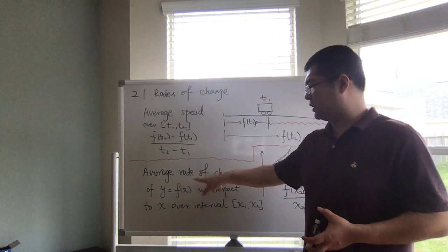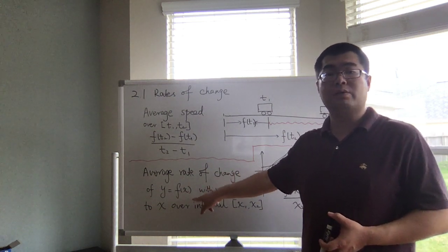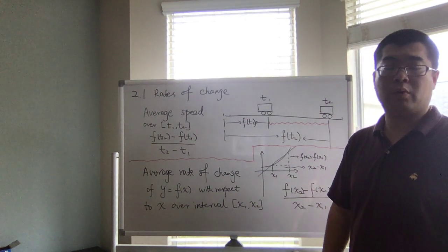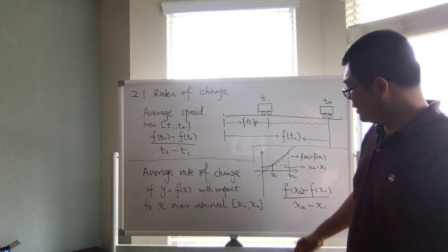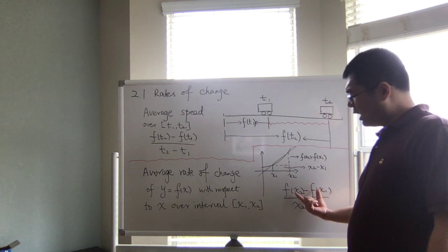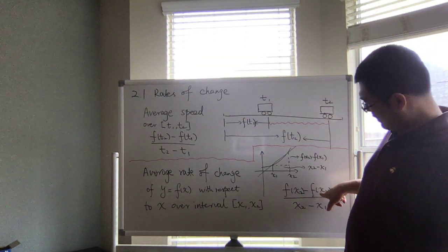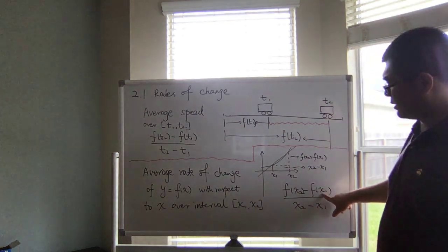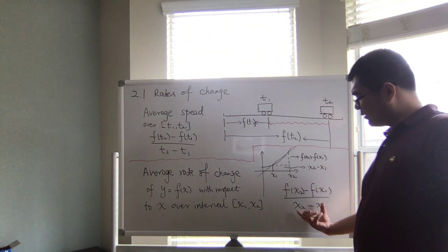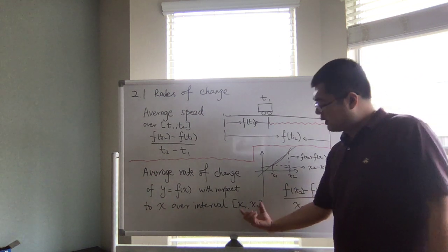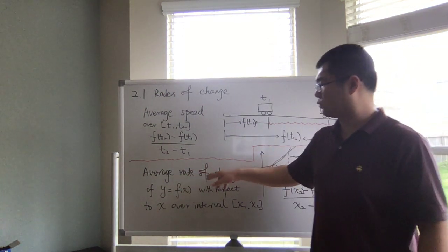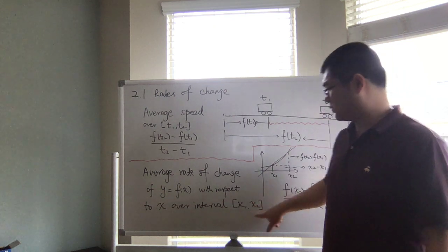With this, let's expand the idea into a more general term in mathematics called the average rate of change of a given function y equals f(x) with respect to x over the interval x1 to x2. The concept is straightforward: it's the change in f values — f(x2) minus f(x1) — over the difference of x values, which is x2 minus x1. This formula is called the average rate of change of the function over the interval from x1 to x2.